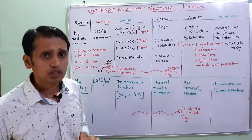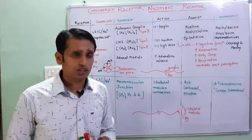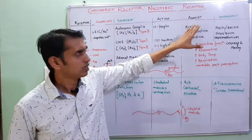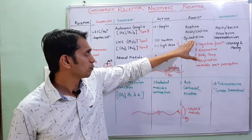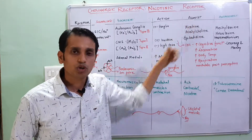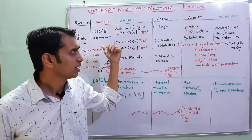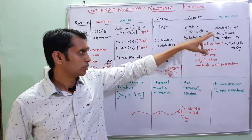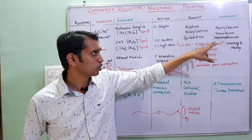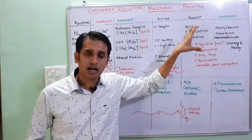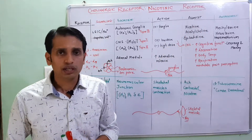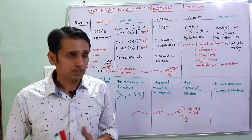Now, regarding agonists and antagonists: nicotine, acetylcholine, and epibatidine are the main agonists for the NN receptors. Mecamylamine, d-tubocurarine, and hexamethonium are the main antagonists for the NN receptors.